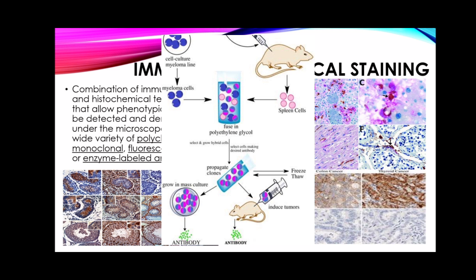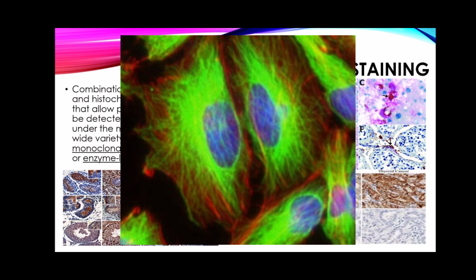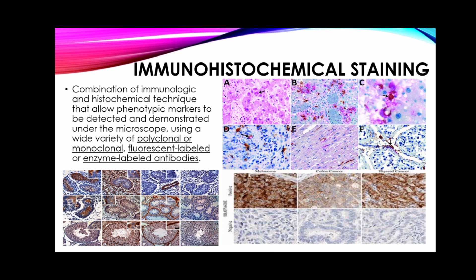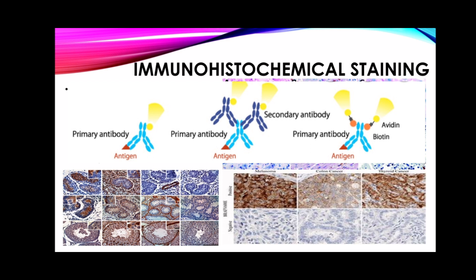Fluorescent-labeled antibodies have fluorescent colors so that when viewed under the microscope, they can be easily identified because they will fluoresce. For enzyme-labeled antibodies, a substrate is added — the same as for enzyme histochemistry — and this substrate acts upon the enzymes and the tissue, so the final coloration is produced by the substrate and not the tissue.